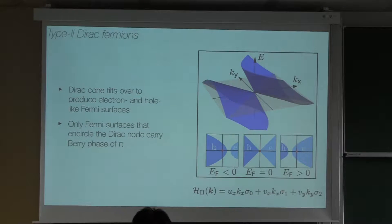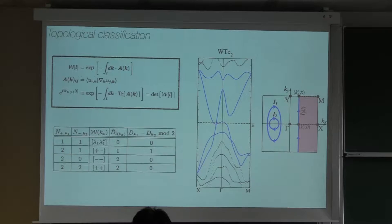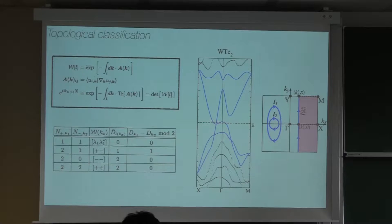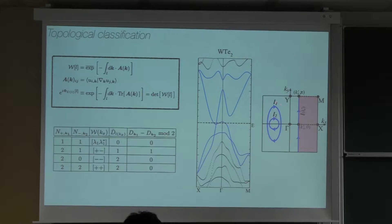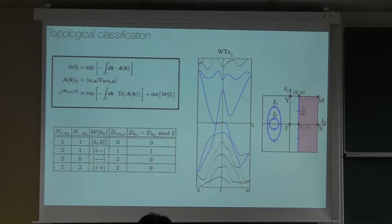The canonical way of classifying semimetals is to locate the crossing point, integrate the Berry curvature around it, and get pi — that's the topological protection. This works here too: as long as you find a loop that is mapped by the screw symmetry without inverting the chirality, you always get pi. But we found another way of characterizing these cones which is much more interesting: by non-Abelian Wilson loops.